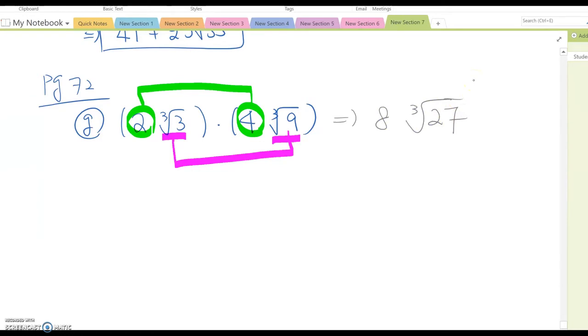27 is 9 times 3, 3 times 3. It's a complete triple, which means it becomes 8 times 3, so it becomes 24. That should be the answer for this problem.